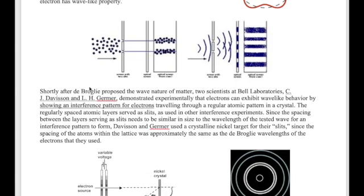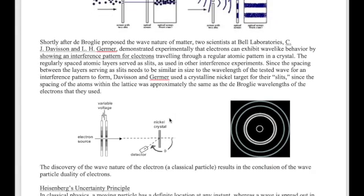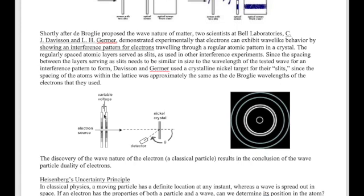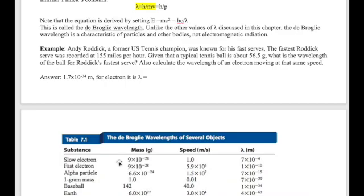This was done by two different groups — one in the United States and one in Britain. The American experiment was known as the Davisson-Germer experiment. If the electron is a wave, it should generate a diffraction pattern when shone on a specific crystal whose atomic spacing matches the electron's wavelength. They placed a nickel crystal on a pedestal, shot it with an electron beam, and put a detector around the crystal to observe the collision pattern. If the electron were a particle, it would not generate a diffraction pattern. But it turns out the electron does generate a standard diffraction pattern, just like X-rays and other high-energy waves.